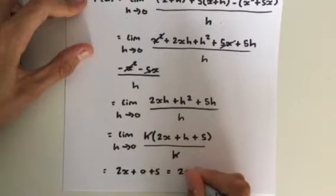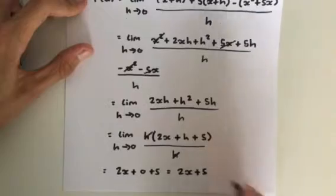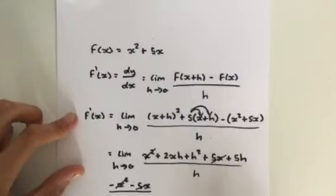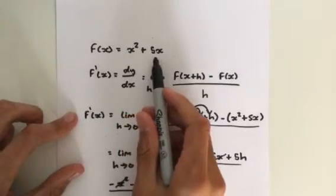The limit as h approaches 0 of 2x plus h plus 5. We get 2x plus 0 plus 5, which is equal to 2x plus 5. And this is our derivative of our original function, x squared plus 5x.